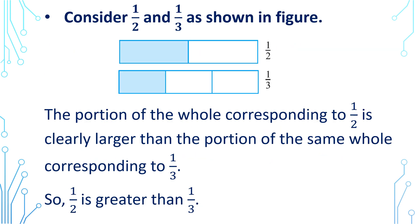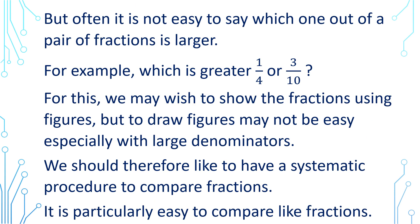Consider 1 by 2 and 1 by 3 as shown in the figure. The portion of the whole corresponding to 1 by 2 is clearly larger than the portion corresponding to 1 by 3. So 1 by 2 is greater than 1 by 3. But often it is not easy to say which one out of a pair of fractions is larger — for example, which is greater, 1 by 4 or 3 by 10? Drawing figures may not be easy, especially with large denominators. We should therefore have a systematic procedure to compare fractions.